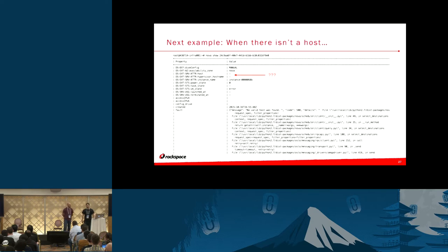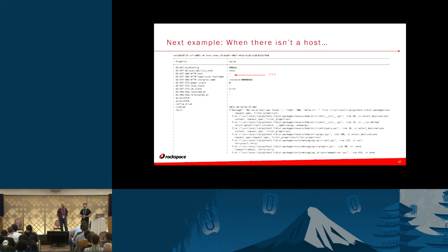We went into the Linux bridge configuration file — in this case the ML2 configuration file — and we can see it right there: 'eht2' in the underlying section. That's obviously incorrect. We made that change, restarted the agent, and everything worked properly.